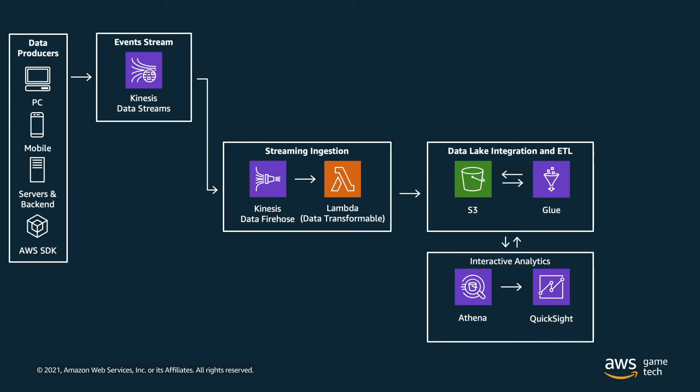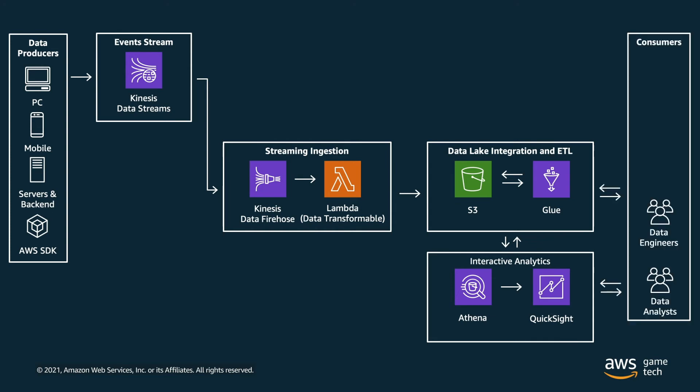You can also use QuickSight, our business intelligence tool, to create dashboards and visualizations to better interpret your data, and even embed these dashboards in any applications you want. On the right-hand side of this architecture are the consumers of the data — data analysts who look at QuickSight dashboards to monitor KPIs like total revenue per day, and data engineers who use Amazon Athena to write more complex queries to assess KPIs like average revenue per daily active user.